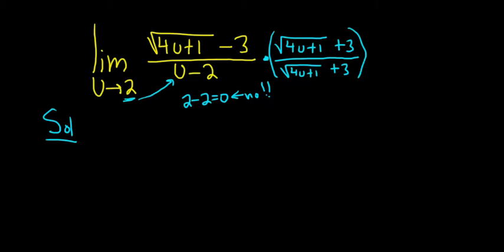So now this becomes the limit. We have to keep writing the limit sign until we actually plug in the number, as u approaches 2. The formula here is the difference of squares formula. This is a minus b, and this is a plus b. When you multiply this out, you get a squared minus b squared.